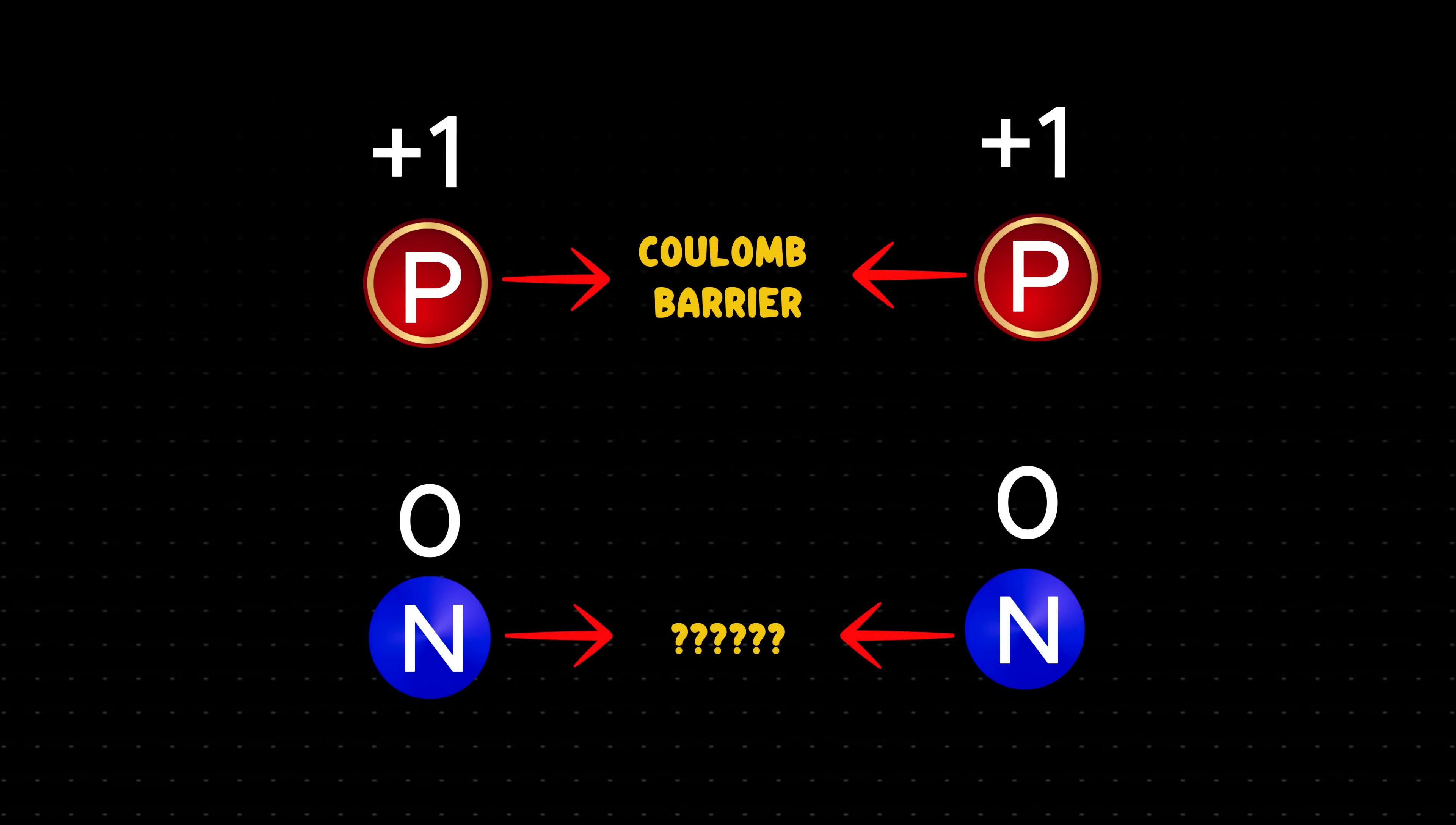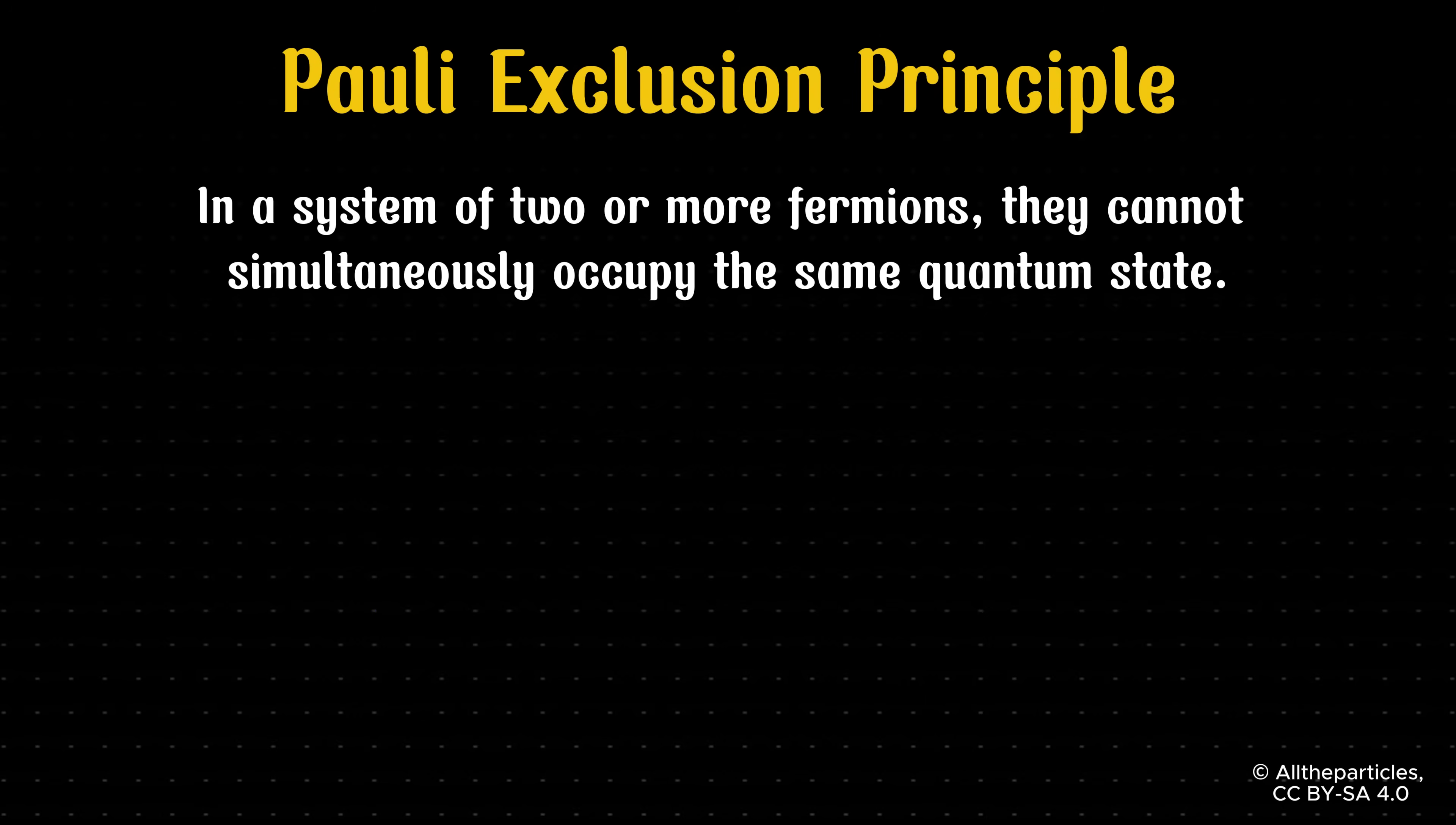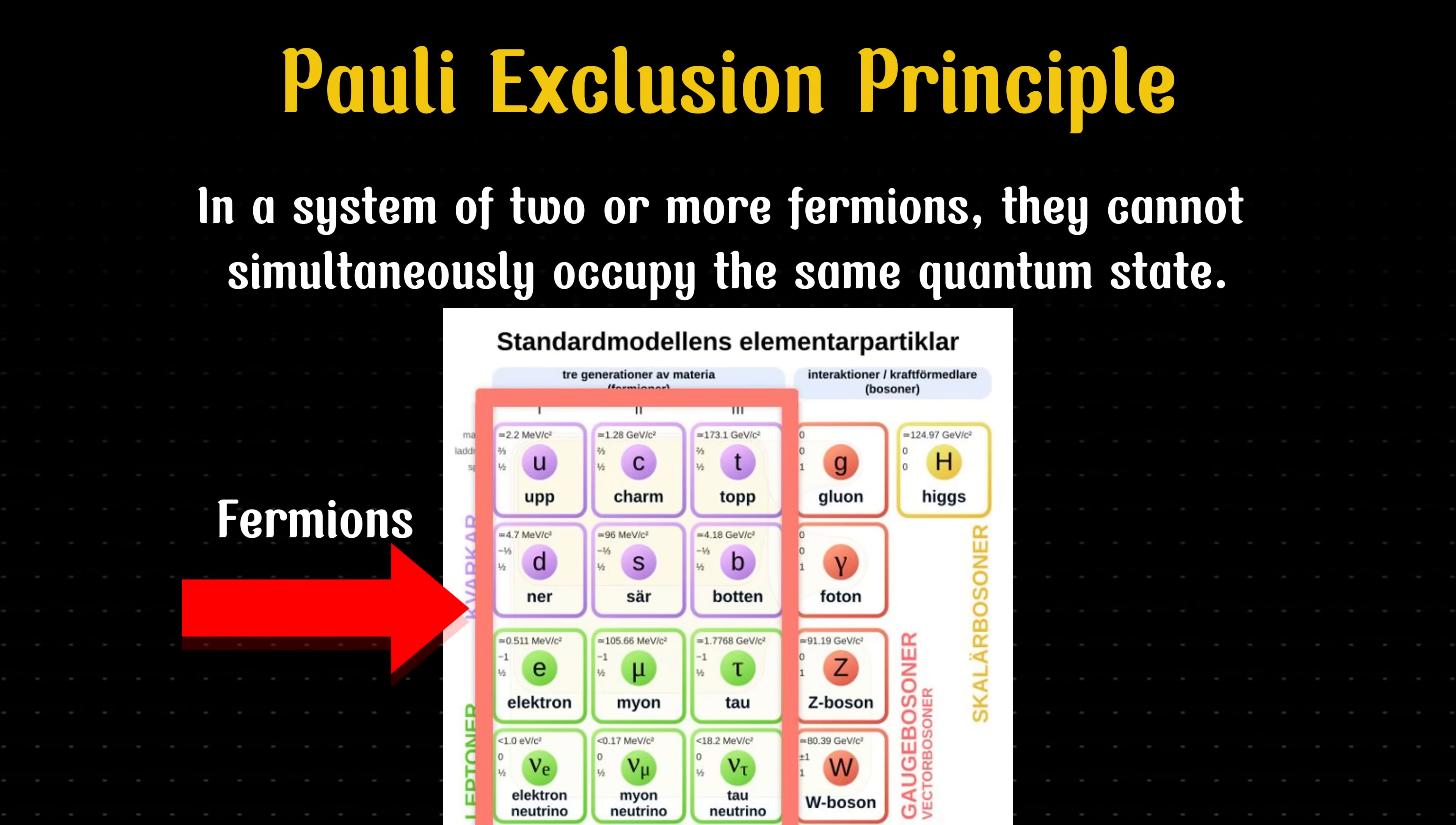Neutrons, being electrically neutral, don't face this issue. So why don't they bond with each other? The answer lies in quantum mechanics, specifically the Pauli Exclusion Principle. This principle states that no two fermions, like neutrons, in a system can occupy the same quantum state.